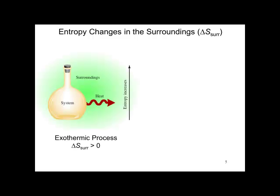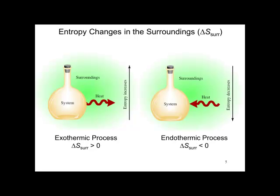The entropy changes for an exothermic process shows that the change in the entropy of the surroundings will be greater than zero. Entropy increases. For an endothermic process where the system absorbs heat, the entropy of the surroundings decreases. Delta S of surroundings will be less than zero.